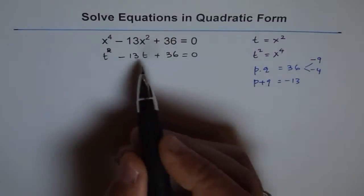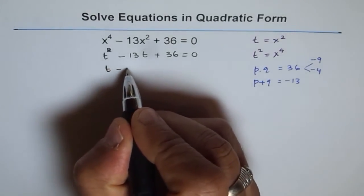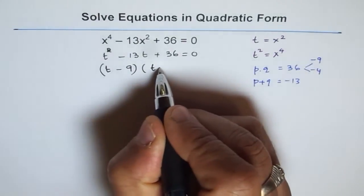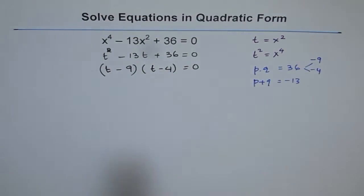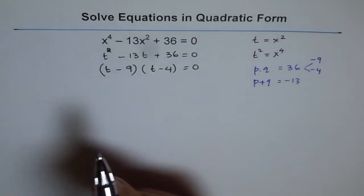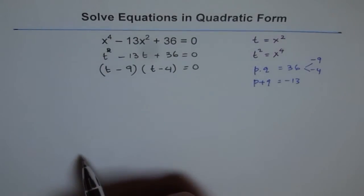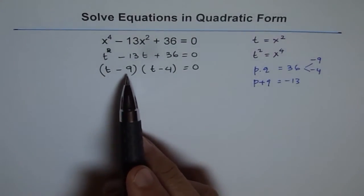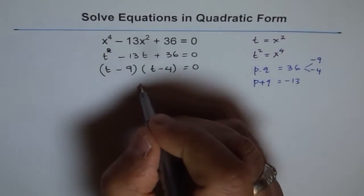So we can write this in factored form and that is t minus 9 times t minus 4 equals 0. If you want you can check, expand and see if you get the original equation. So that's our factored form. Now in this factored form what values of t can give you 0? One value of course is 9. The other one is 4. So let's try both of them.